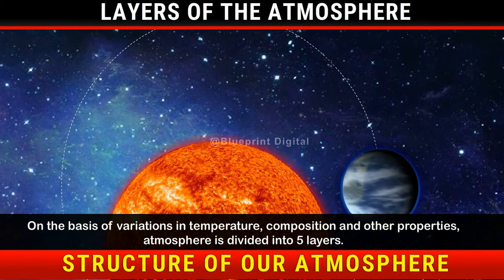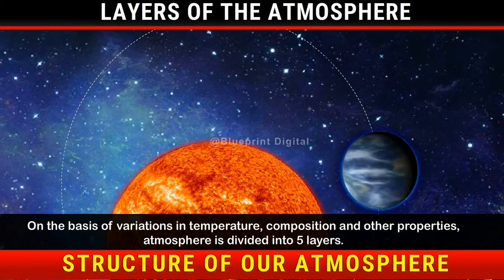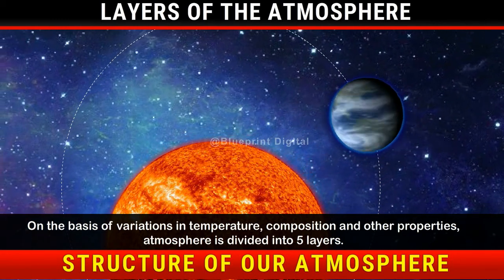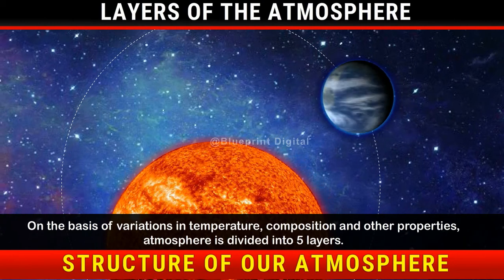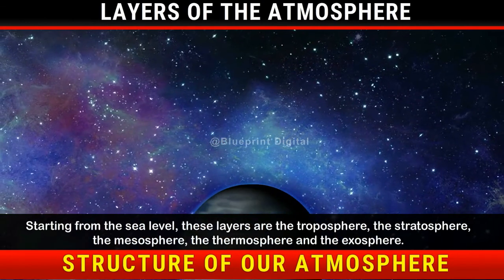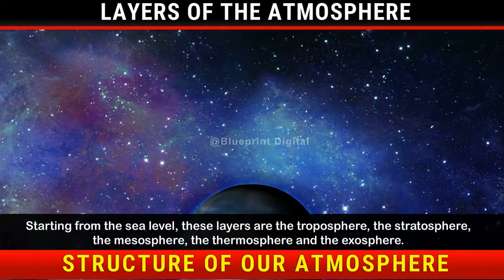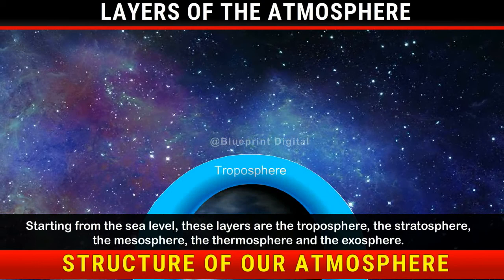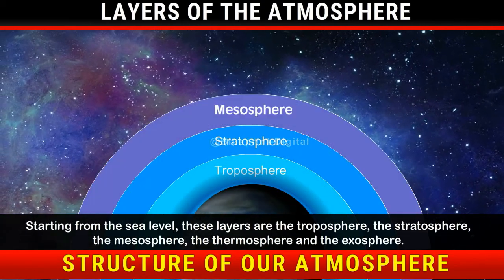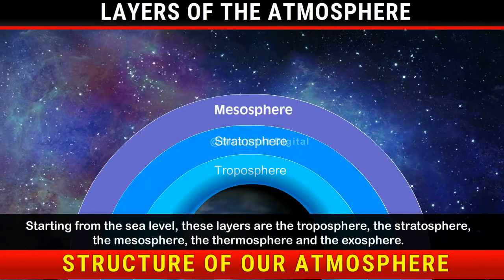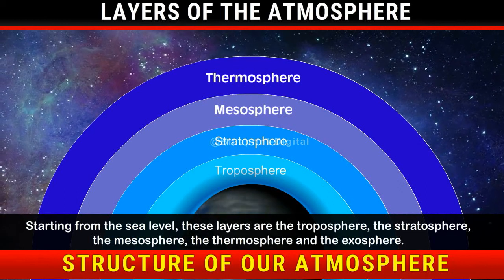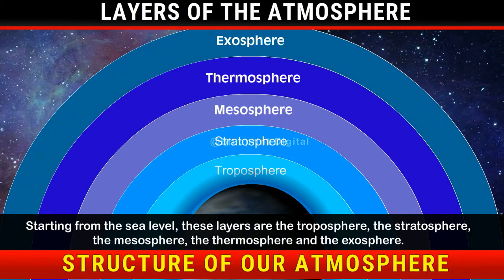On the basis of variations in temperature, composition and other properties, the atmosphere is divided into 5 layers. Starting from the sea level, these layers are the troposphere, the stratosphere, the mesosphere, the thermosphere and the exosphere.